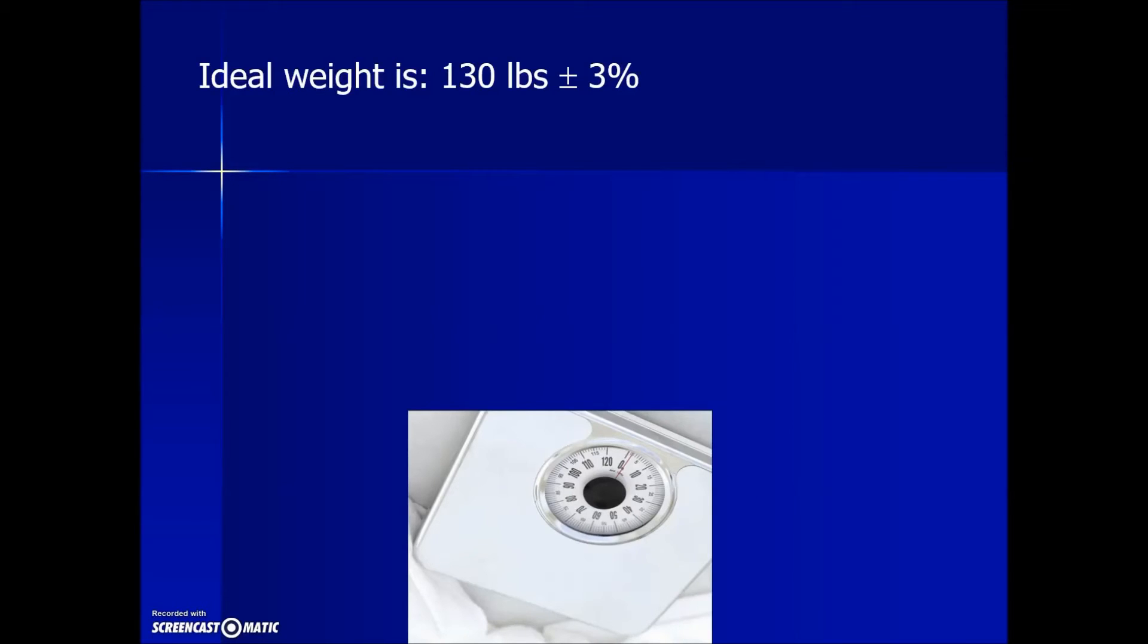Sometimes tolerances will be expressed as a percent, and a preliminary step is to translate that percentage into an actual value that we can then add and subtract to find our upper and lower limits. In this example, the ideal weight is 130 pounds plus or minus 3 percent.